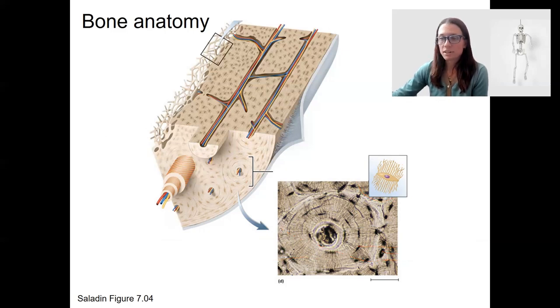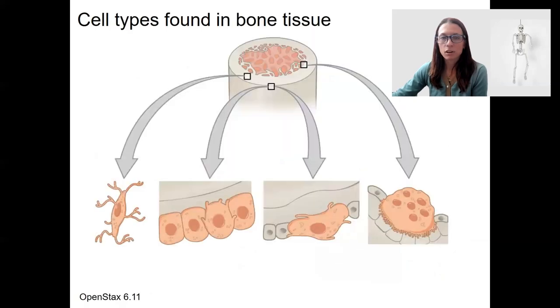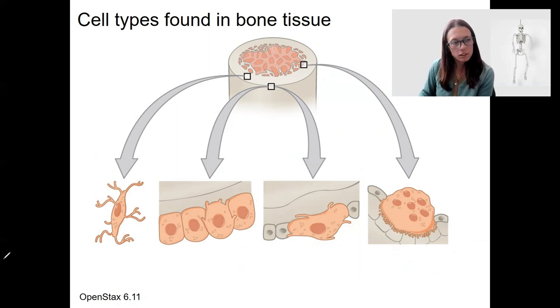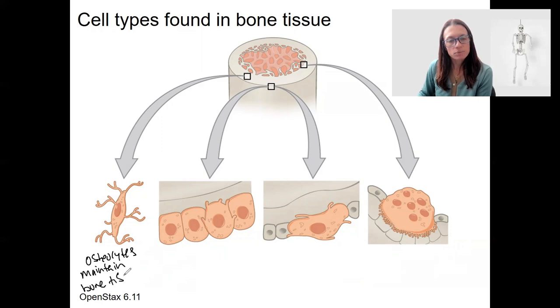So osteocytes are one type of bone cell, but there are others. So there are four types altogether. Osteocytes are the ones I've mentioned already. Those are over here. Those look kind of like what you saw before. These are going to maintain the bone tissue, just like chondrocytes do that in cartilage. So these are mature bone cells that maintain. They're mature.